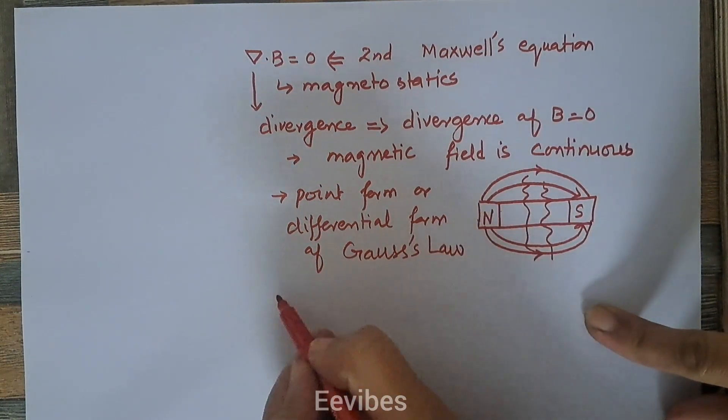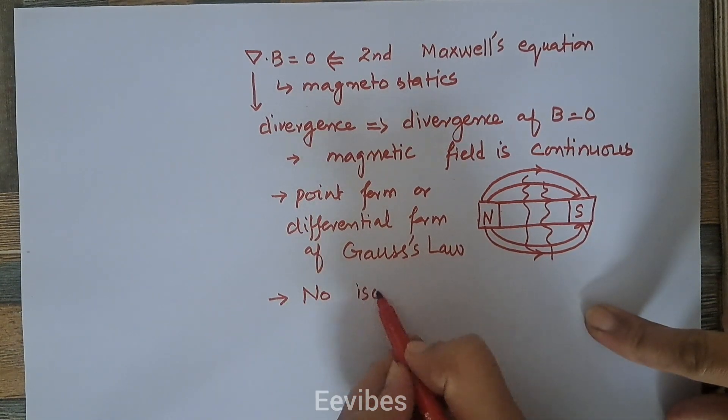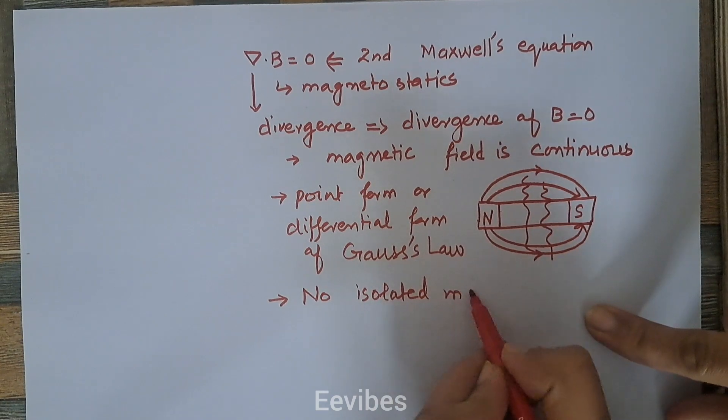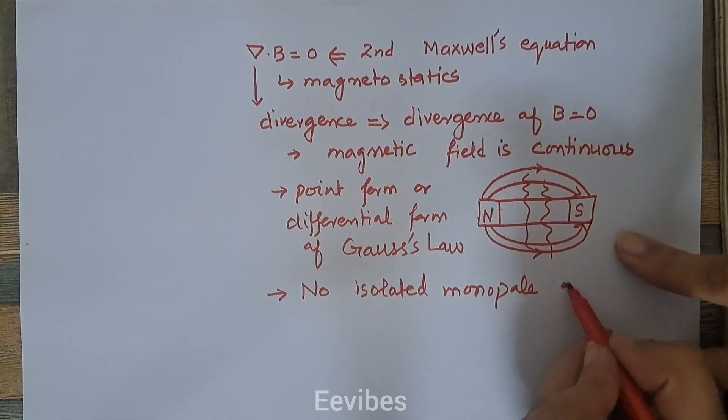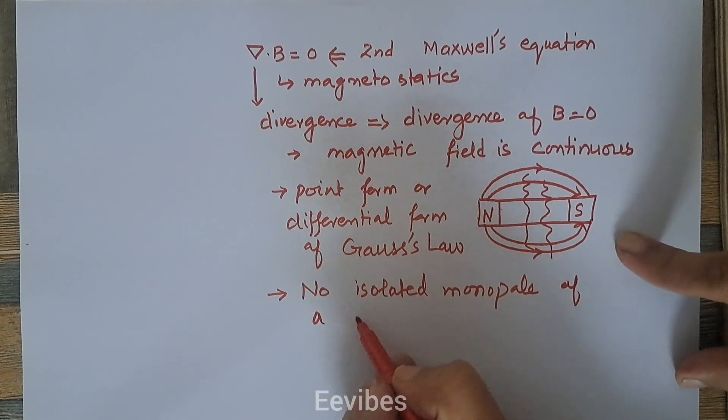And we can see that no isolated monopole of a magnet exists.